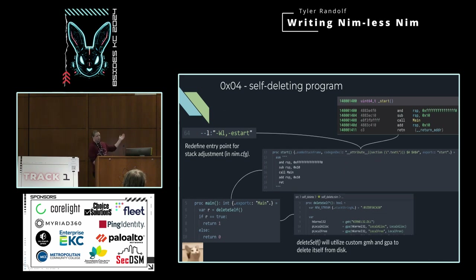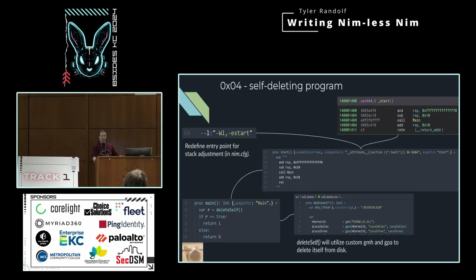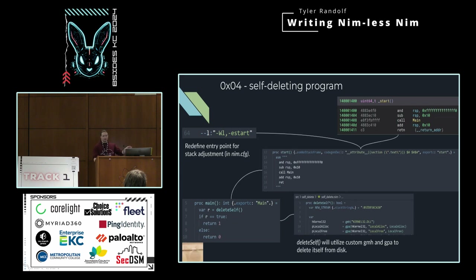We're also going to clean up the start function. Instead of just jumping to main, we declare our own start function and use inline assembly. The assembly adjusts the stack to ensure it's 16-byte aligned, then calls main. We can see with inline assembly it goes directly into what we write into the binary. One pragma I'm passing into start is codegen decl with an attribute declaring it in the .text section. Since nothing else is declared in .text, this puts it at the top of the text section — we'll see why that matters in a second.